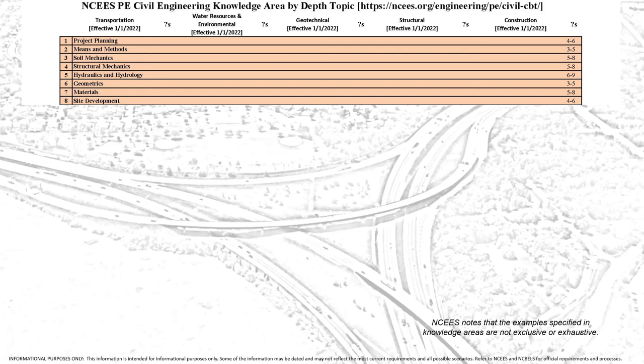For the Civil Engineering PE exam from NCEES, there are five depth topics: transportation, water resources and environmental, geotechnical, structural, and construction.